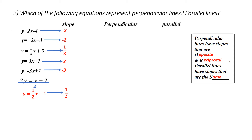Now, how many of these are parallel? Parallel slopes are the same. I look at the slope of two — there are no others that have a slope of two. I look at the slope of negative two — none of the other slopes are negative two. One-third? No. Three? No. Negative three? No. And one-half? No. So what does this tell me? None of the slopes or equations are parallel.